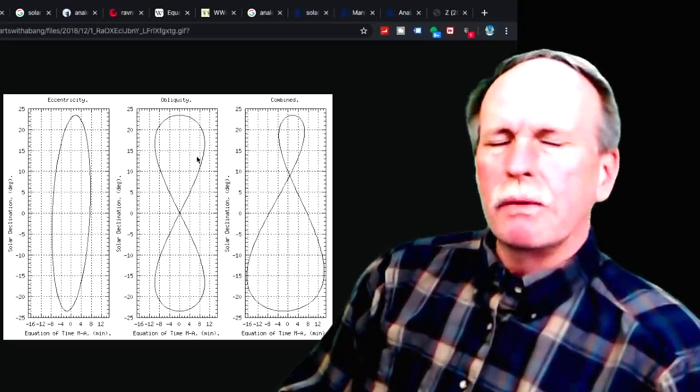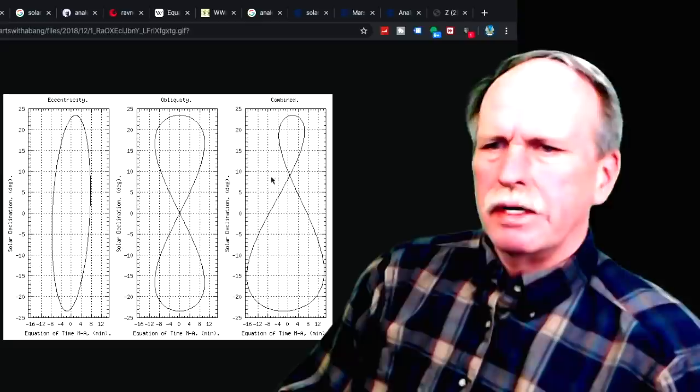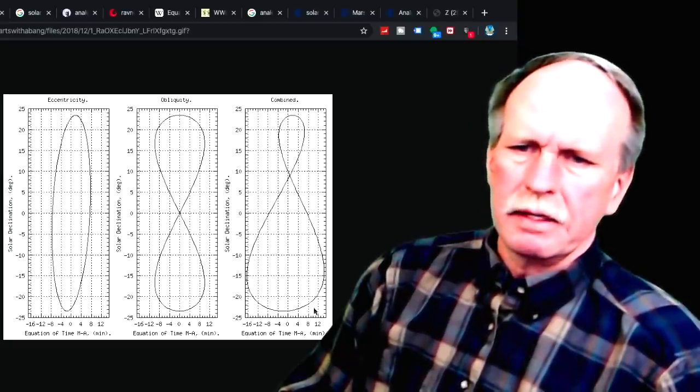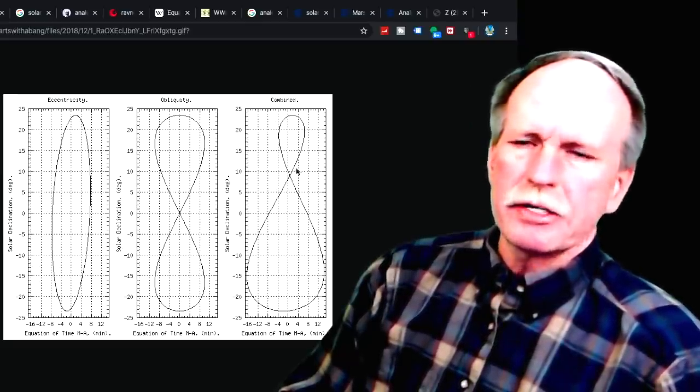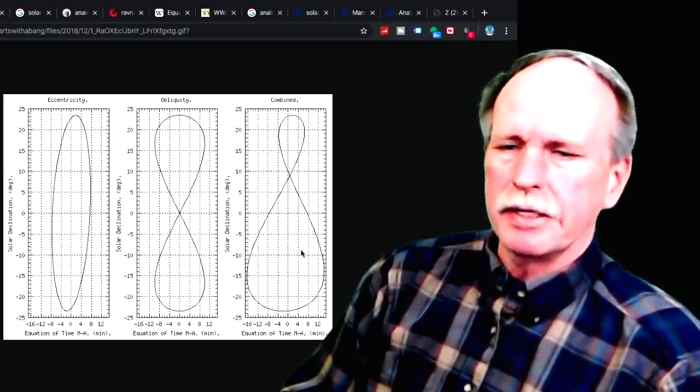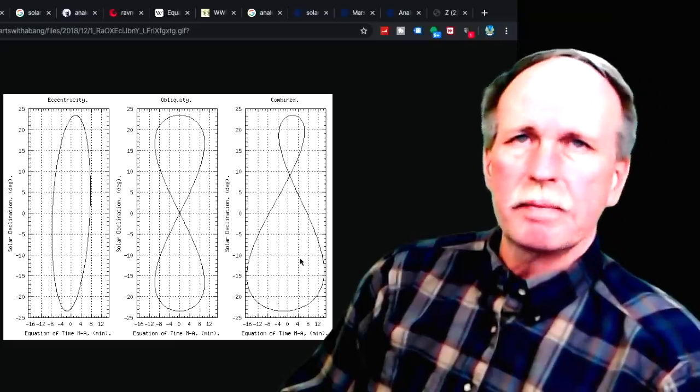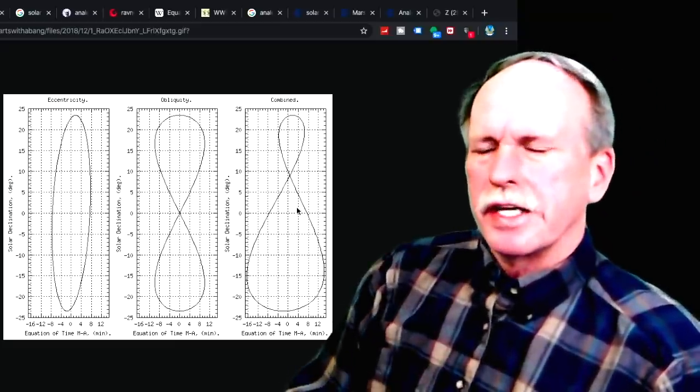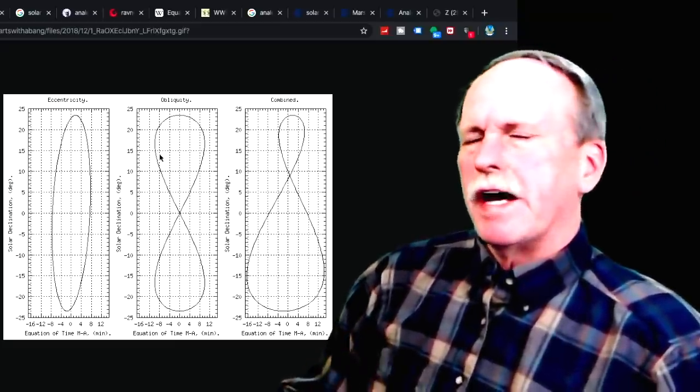But that's not what we see in our skies. We see something that looks like this. And notice that that's asymmetrical. The small loop is at the northern part of the analemma, and the big loop is at the bottom part. Now why is this? Because there's another factor involved.